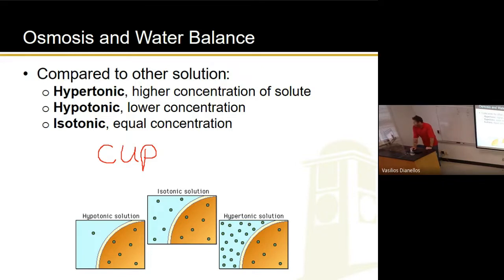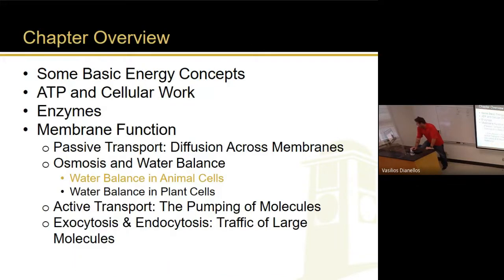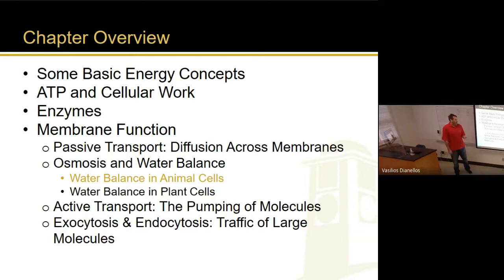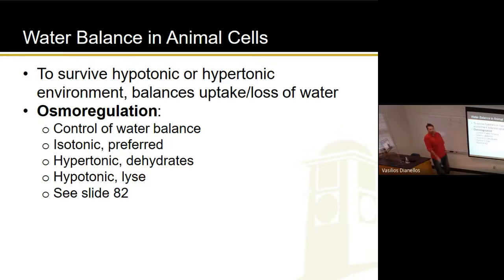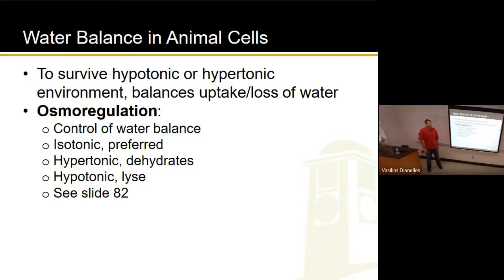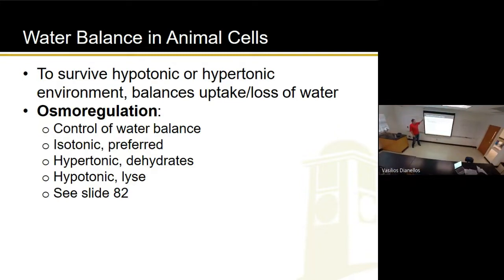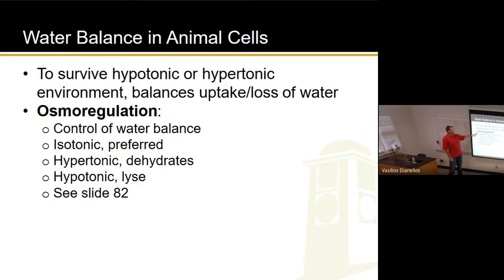Let's move forward. Here's where it gets a little easier. Let's talk about water balance in animal cells first, because we are animals. Also notice we're talking about animal cells and plant cells — not fungi, bacteria, or protists; you can look those up for independent work. To survive a hypotonic or hypertonic environment, animal cells have to balance the uptake and loss of water. The word for that control is osmoregulation — it's basically regulating osmosis; it's the control of water balance.